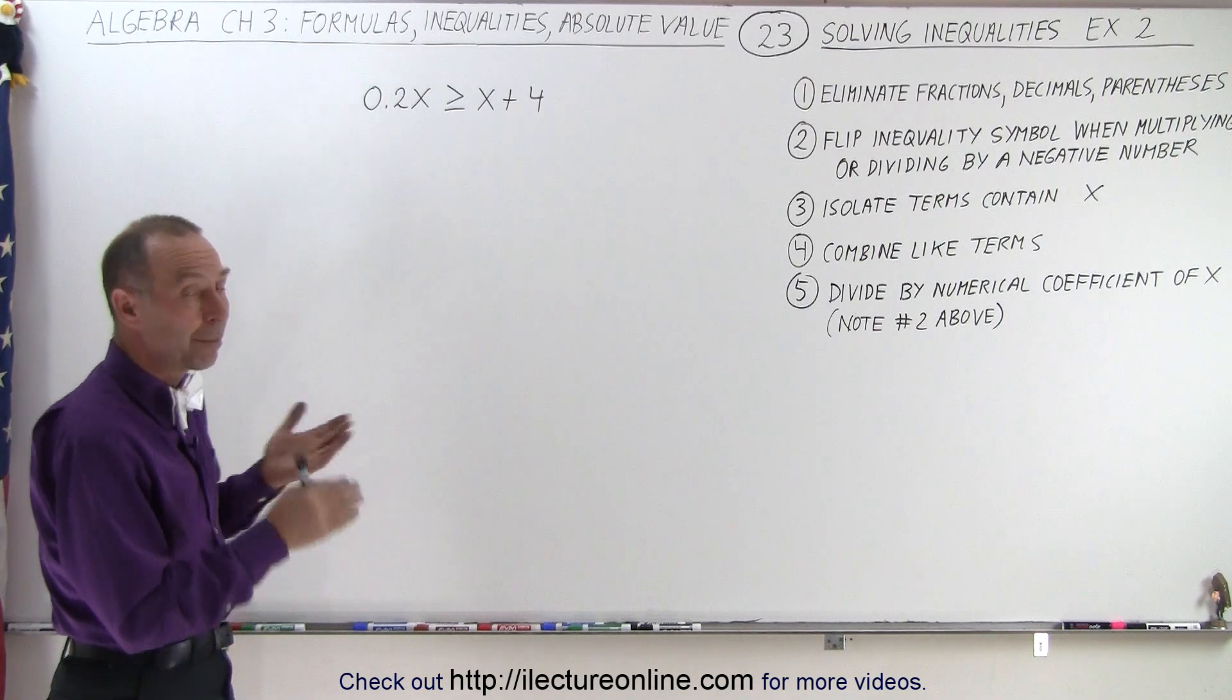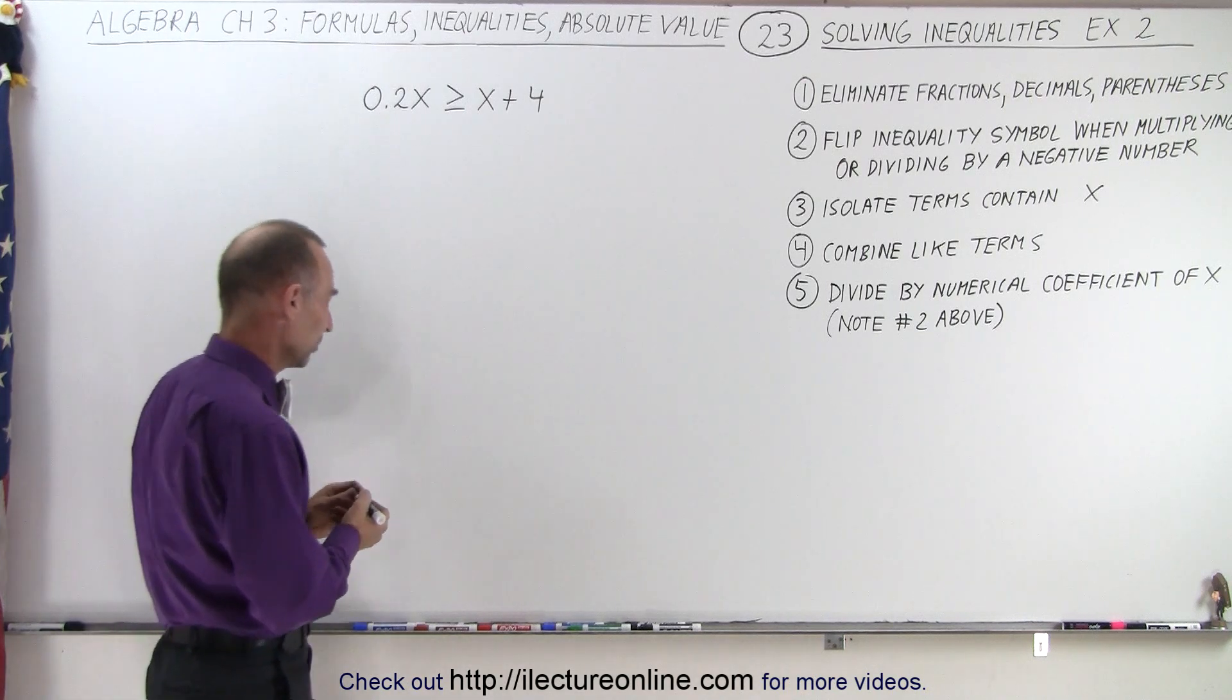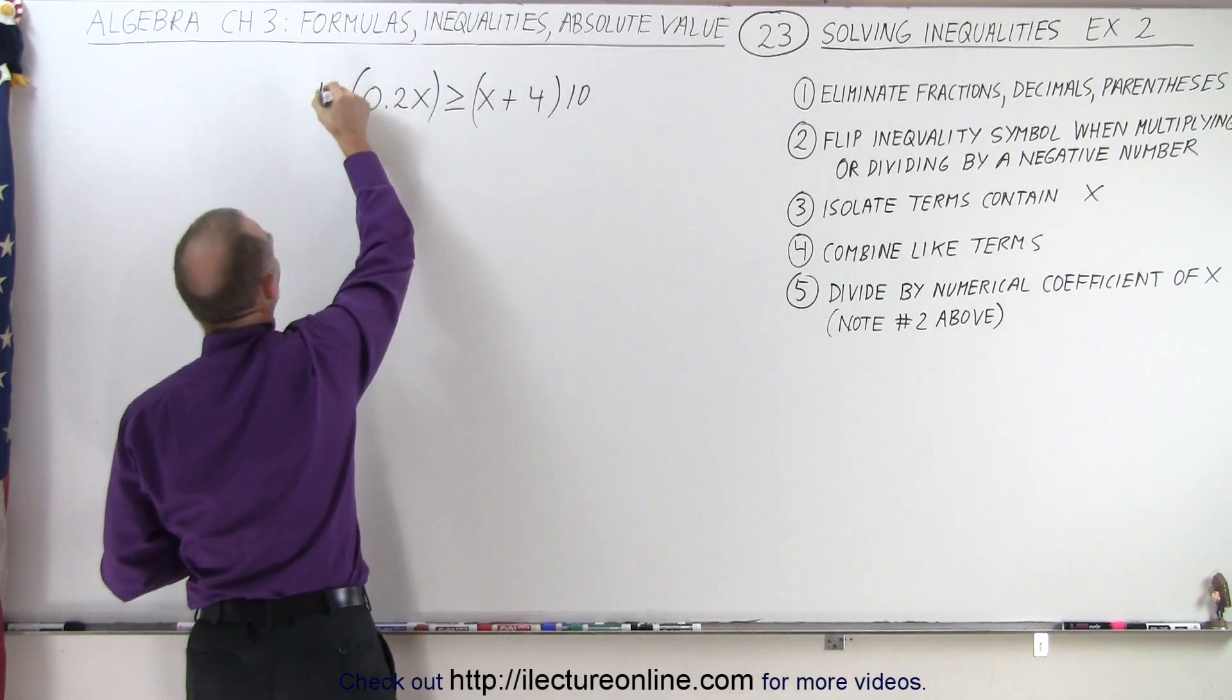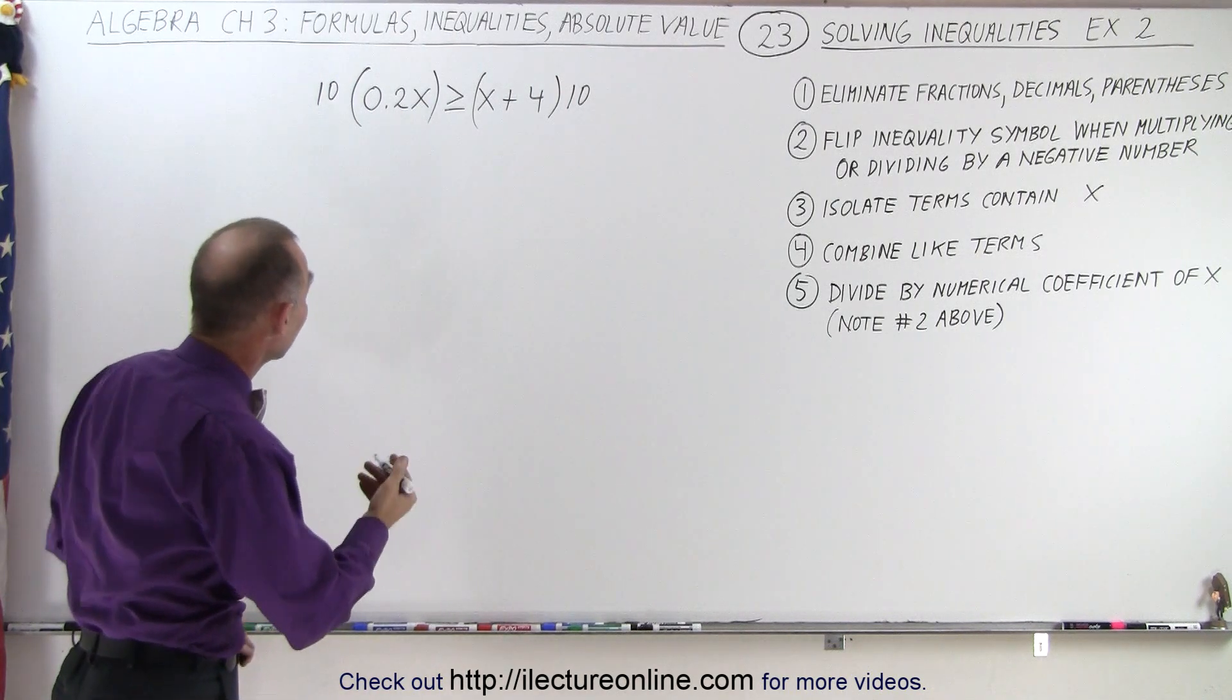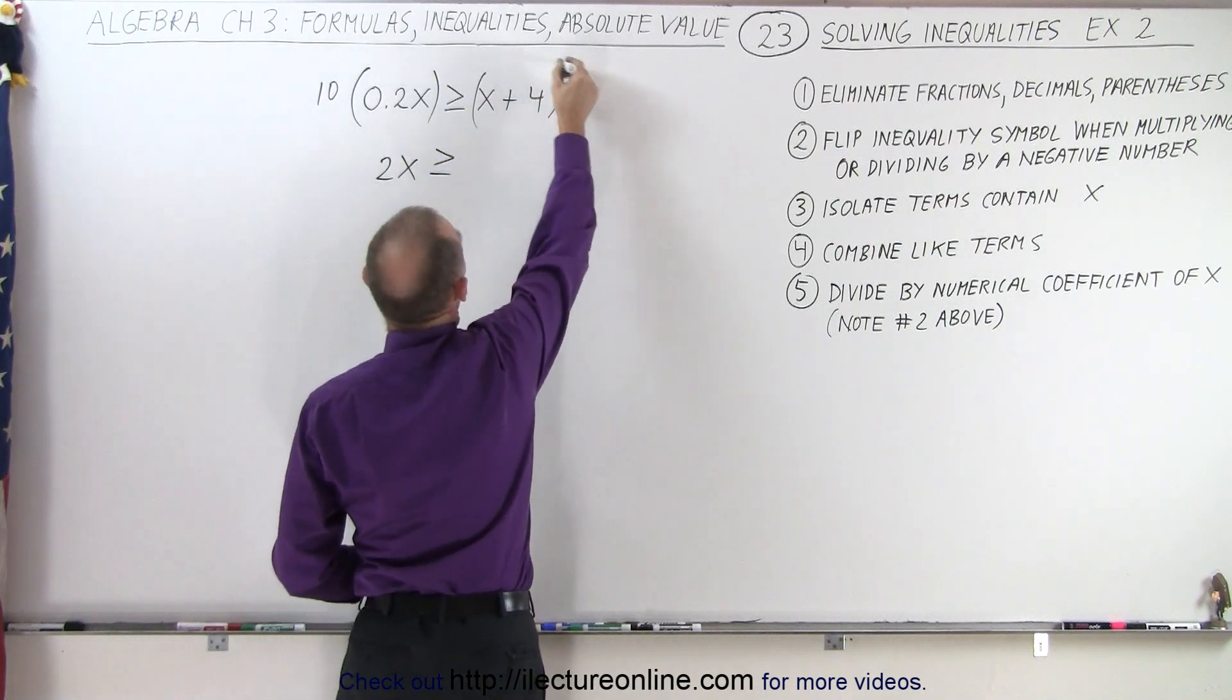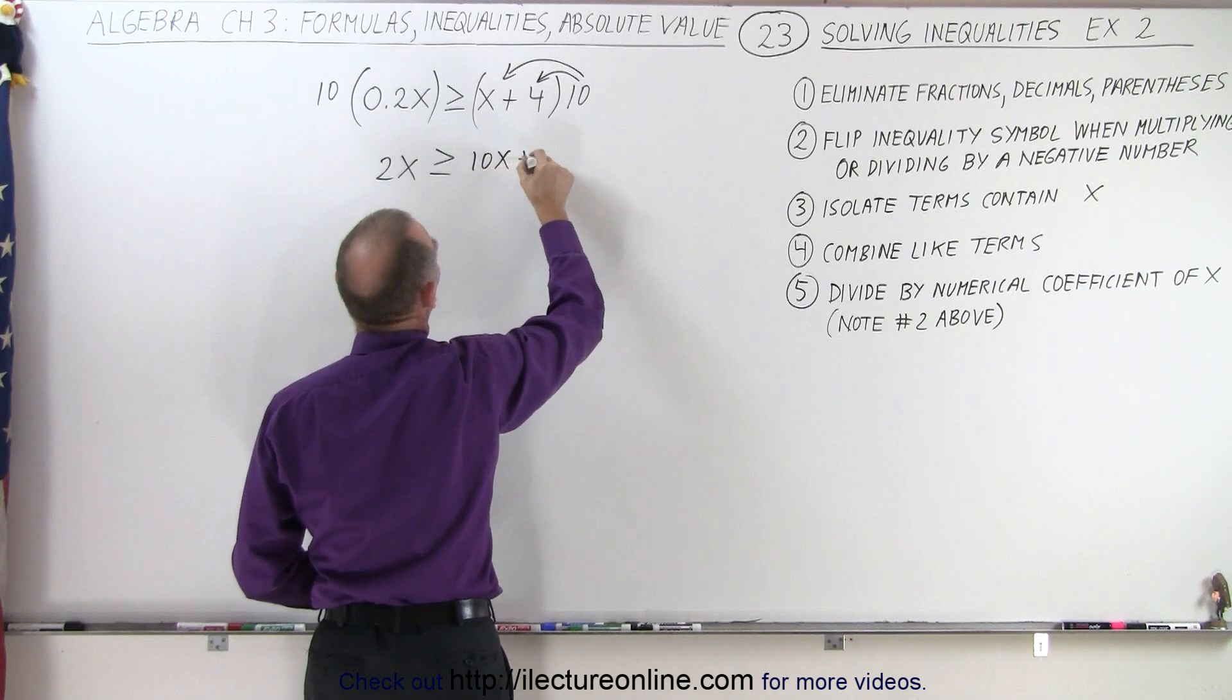We can do so by multiplying both sides of the inequality by the number 10. So we're going to multiply the left side and the right side by 10. Since it's a positive 10, we don't have to worry about flipping the inequality symbol. On the left side, we end up with 2x greater than or equal to, on the right side, we're going to distribute the 10 over both terms, so we end up with 10x plus 40.